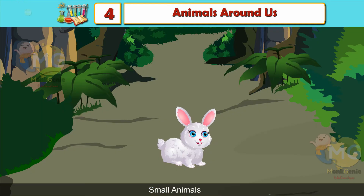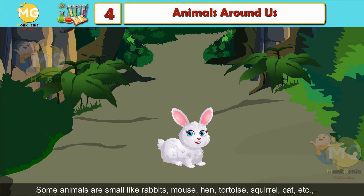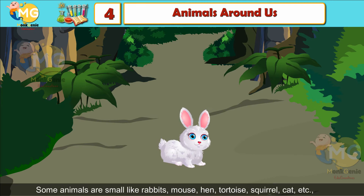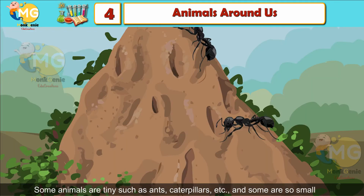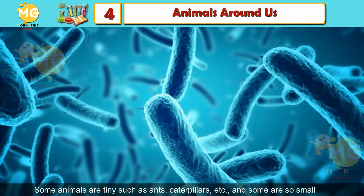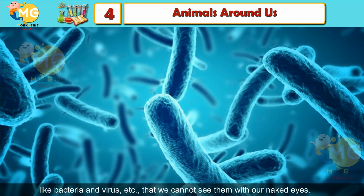Small animals. Some animals are small, like rabbits, mouse, hen, tortoise, squirrel, cat, etc. Some animals are tiny, such as ants, caterpillars, etc. And some are so small, like bacteria and virus, that we cannot see them with our naked eyes.